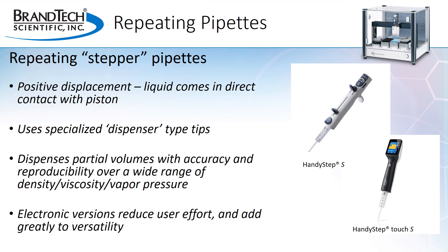Electronic repeating pipettes, such as the HandyStep Touch and Touch S, offer much more versatility than a simple manual repeating pipette. They offer more flexibility in volume setting and more options in functionality. With an electronic instrument like the HandyStep Touch or Touch S, it's possible to perform auto-dispensing, sequential dispensing of different volumes, multi-aspirating of different volumes, and save favorites. Also, because the piston movements are electronically controlled, there is a wide range of speeds for both aspiration and dispensing, which is helpful for liquids that have a tendency to foam or bubble. An electronic instrument also reduces strain due to repetitive motion, which can be an important consideration when repeat dispensing for long periods of time.